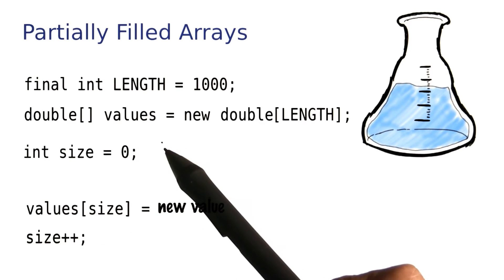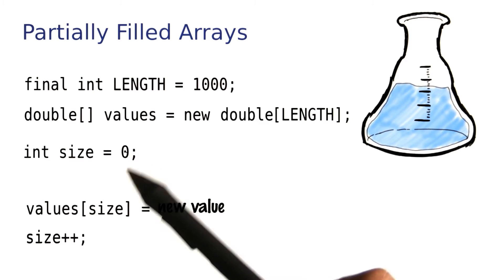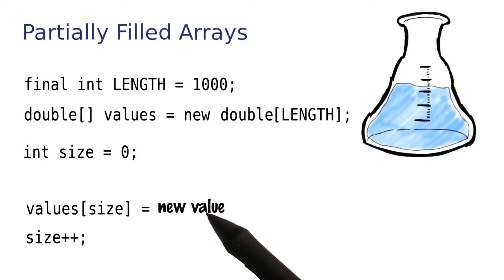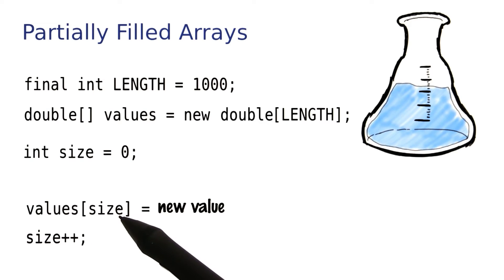For example, to insert the very first element, size is 0. Values bracket 0 is now initialized and the size becomes 1. Next time, values of 1 gets filled and so on.